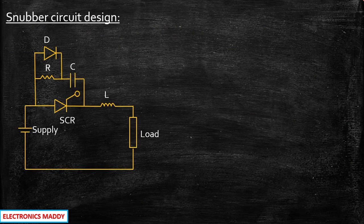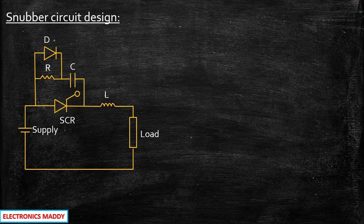This circuit diagram of snubber circuit was arrived at in lecture number 16, that is protection of SCR. A snubber circuit is used for protection purposes, and there we came up with the ideology of why we need this particular circuit. That is a very useful video — in case you have not watched it, please do watch it — but I will give you an overview of what all these components are used for.